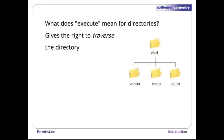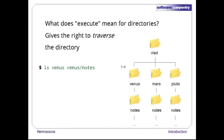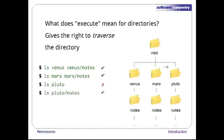Vlad's home directory has three subdirectories called Venus, Mars, and Pluto, each with a subdirectory called notes containing various files. If a user's permissions on Venus are r-x, she can see the contents of both Venus and Venus/notes. If her permissions on Mars are just r-dash, she can read the contents of both Mars and Mars/notes. But if her permissions on Pluto are only --x, she cannot see what's in the Pluto directory, though if she tries to look in Pluto/notes, the computer will let her do that — she's allowed to go through Pluto but not look at what's there.